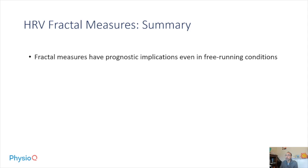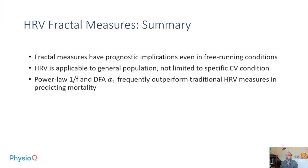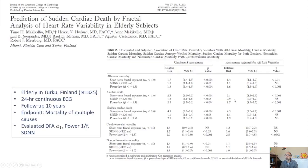To summarize heart rate variability and fractal measures: fractal measures have prognostic implications even in free-running conditions, as heart rate was collected using 24-hour Holter monitoring without restrictions on participants. Heart rate variability is applicable to the general population, not limited to specific cardiovascular conditions. Power law 1/f and DFA alpha 1 frequently outperform traditional HRV measures in predicting mortality, particularly in the era of beta blockers. Power law 1/f tends to correlate more with all-cause mortality, whereas DFA alpha 1 correlated more with cardiac mortality.